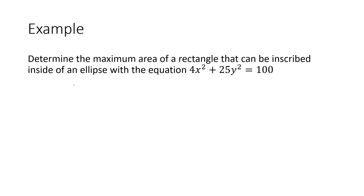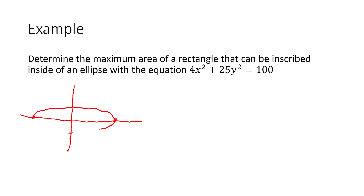You might be thinking, what's an ellipse? Well, an ellipse is similar to a circle in some ways, but it might be longer than it is tall, or it might be taller than it is long. Someone might casually refer to it as an oval. There's a more precise definition, of course, but we could use that for purposes of this question.